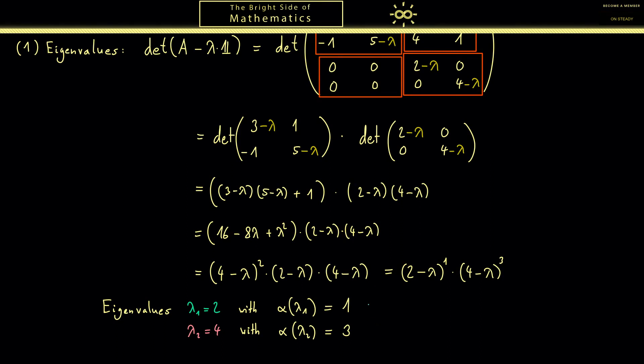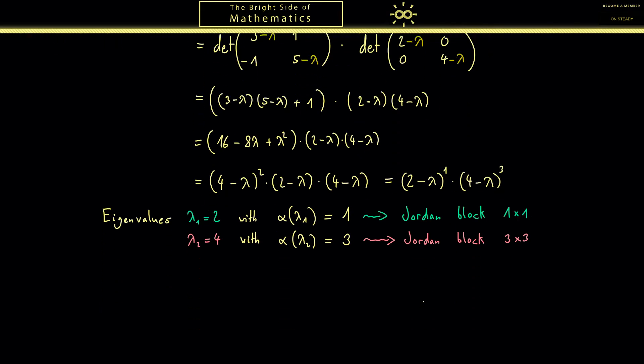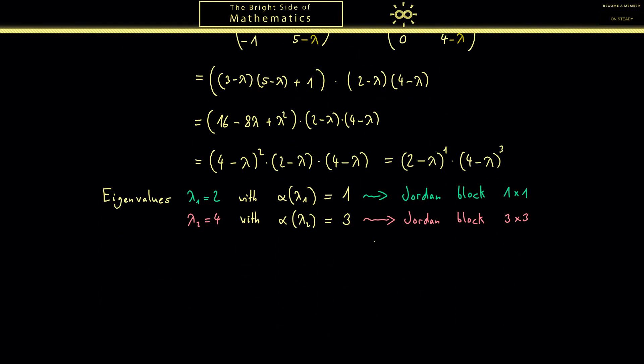Regarding now the Jordan normal form, I told you in the first video that the algebraic multiplicity tells you the size of the Jordan block. So for the first eigenvalue this means the Jordan block has the size 1 times 1, the smallest possible one. And for the second one it's just 3 times 3. The first lesson you should learn here is that you already know a lot about the Jordan normal form. Here it is, and you already know outside of the blocks are just zeros. Therefore the only question that remains is how many blocks are inside this big Jordan block.